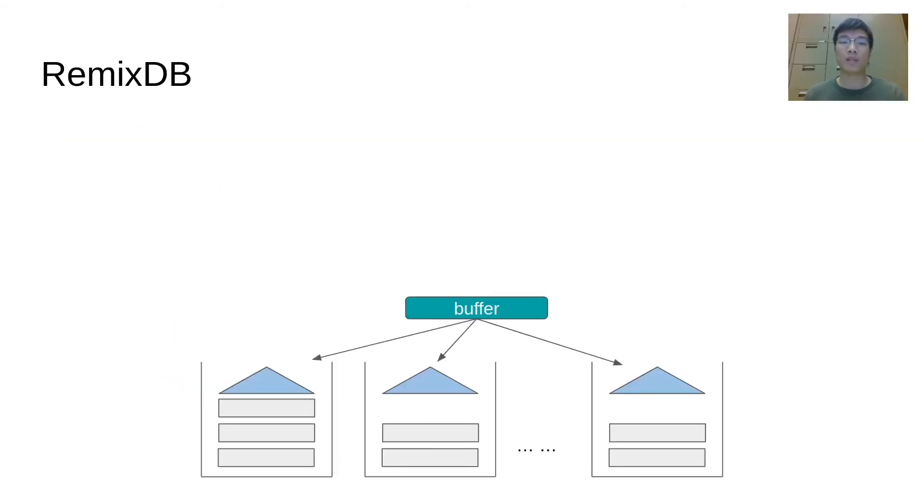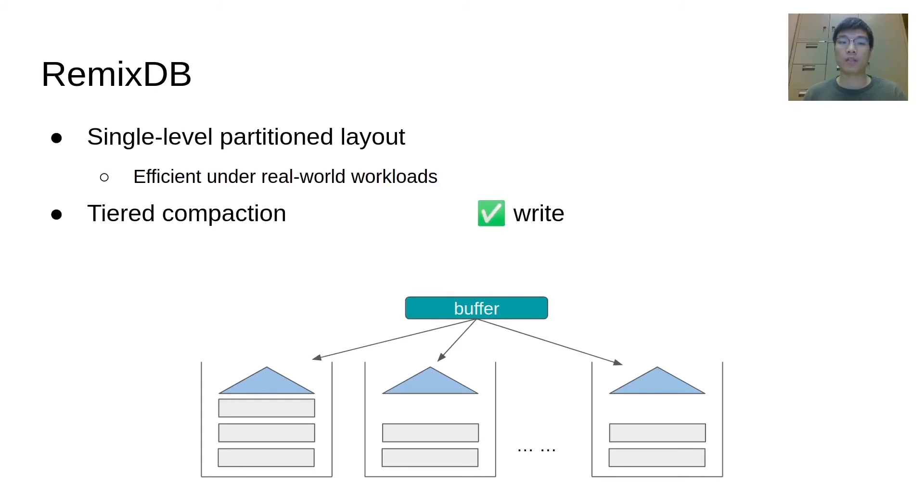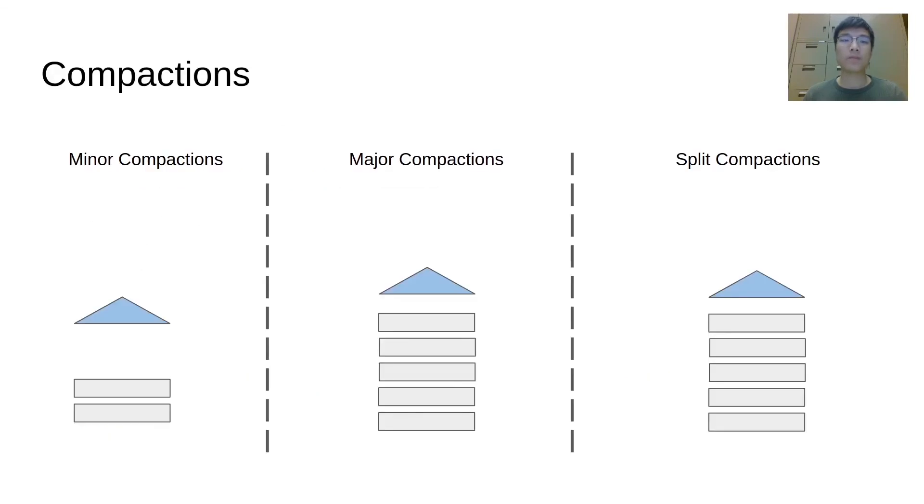Combining with Remix, we build RemixDB, an LSM tree-based key value store. RemixDB uses a single-level partitioned layout, which is proven to be efficient under real-world workloads. In each partition, RemixDB employs tiered compaction policy for efficient write. At the same time, the table files in each partition are indexed by Remix to provide excellent read performance. Similarly to the traditional LSM trees, when the memory buffer fills up, the updates will be flushed to the corresponding partition in the persistent storage.